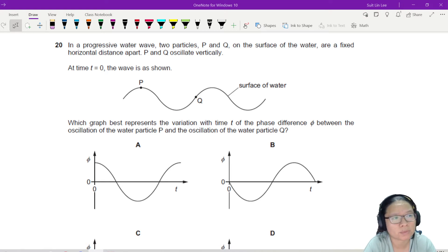You have two waves with two, I mean one wave, one progressive water wave with two particles, P and Q. So P is here and Q is here, right?